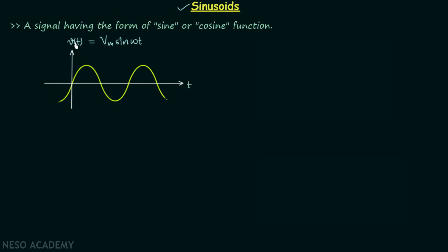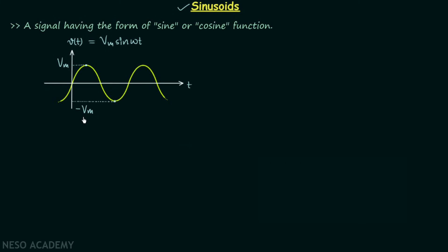The value of V(t) corresponding to the maximum point is Vm, because that point is the maximum extent of the signal when measured from the x-axis. When you focus on the negative peak, the corresponding value of V(t) is negative Vm. So this value of V(t) is Vm and this value of V(t) is negative Vm.